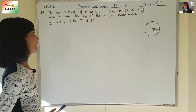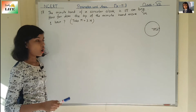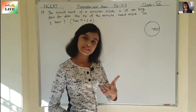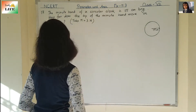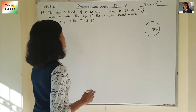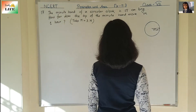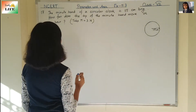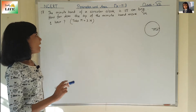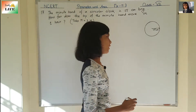The minute hand of a circular clock is 15 centimeters long. How far does the tip of the minute hand move in one hour? Take pi equal to 3.14.